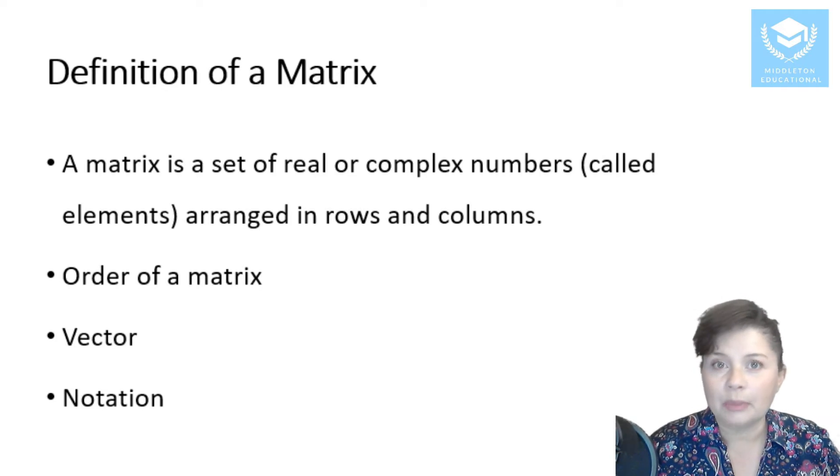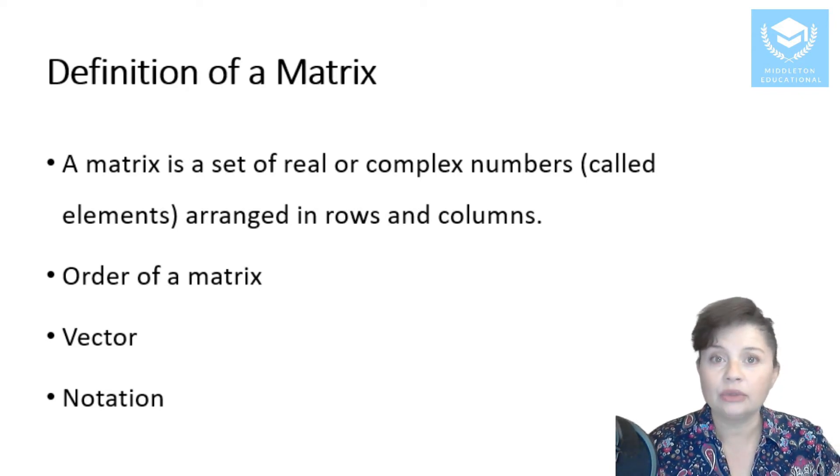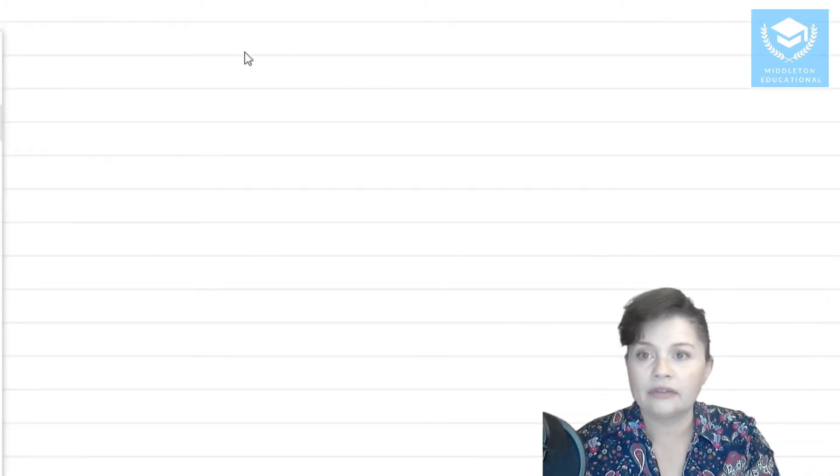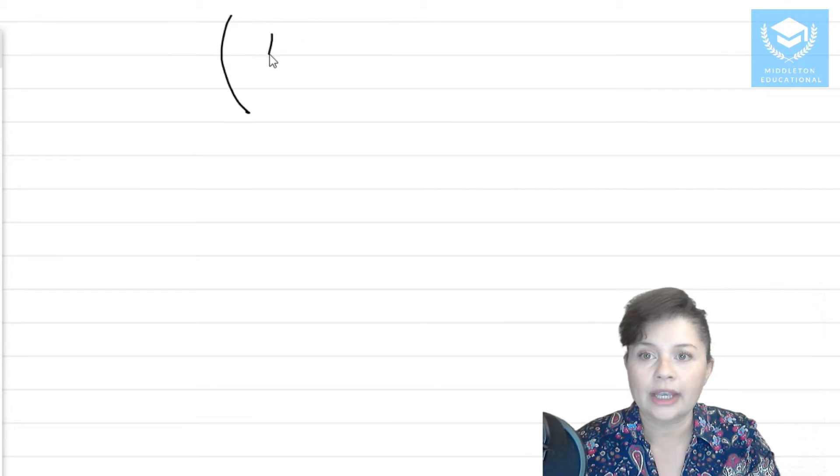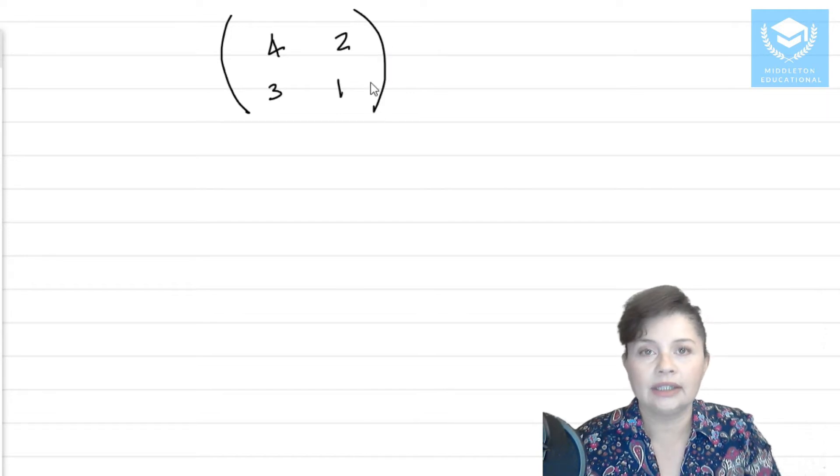So the definition of a matrix. A matrix is a set of real or complex numbers, and they're all called elements arranged in rows and columns. So let's see what that means. So if you have, let's look at an example. I have 4, 2, 3, 1, right? That is a matrix.